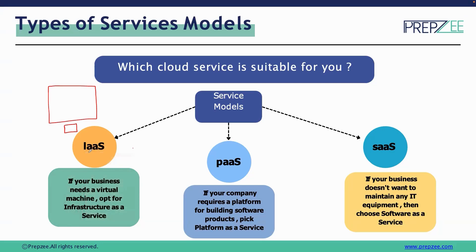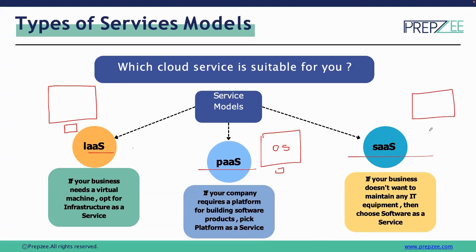With Platform as a Service, we are not getting only the infrastructure — we are getting the OS as well as other software components installed and configured on top of it. So we don't have to worry about setting up the OS; we can get Linux or Windows-based deployments to work with directly. Software as a Service is just like having any cloud application — we don't have to worry about setting up any OS, hardware, or even installing applications. We get the hardware, the OS, plus other applications like MS Office that we can use right away.